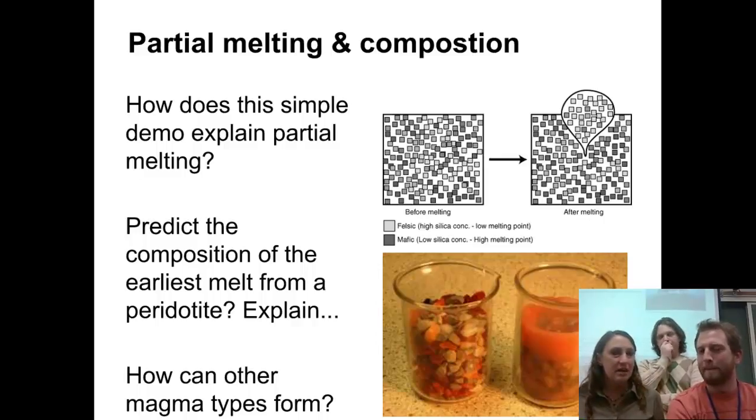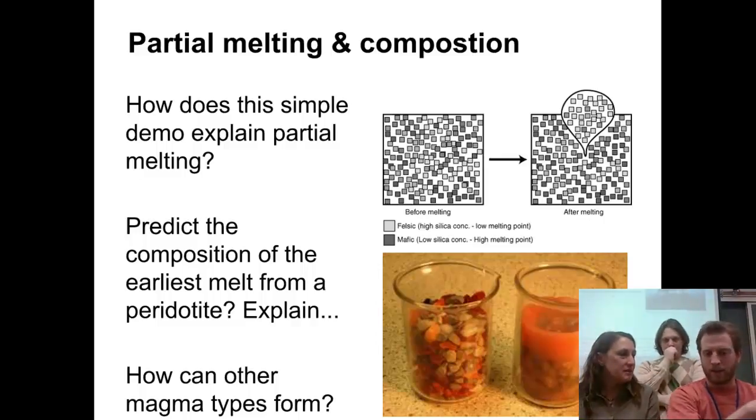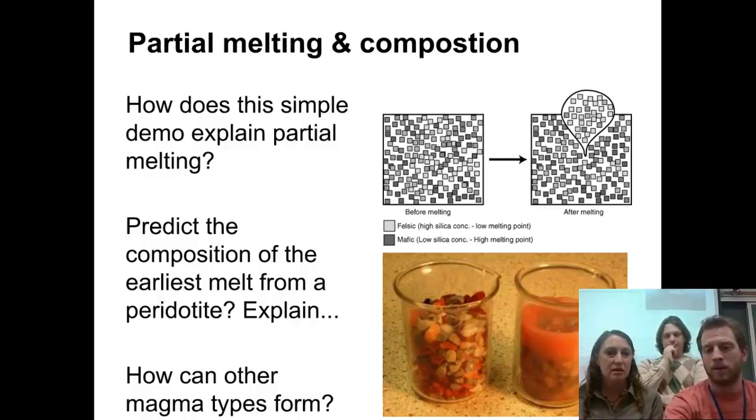We only see the peridotite coming out when it's torn off on the way out as a xenolith. Like a xenolith, so we're tearing off part of a rock and bringing it up with us. Yeah, but it's solid the whole time. It was never melting. So it never melts the whole time. Okay, so that's how we know about partial melting.